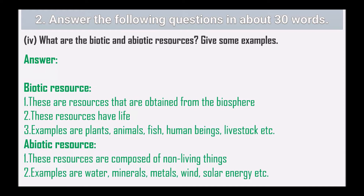Biotic resources are those obtained from the biosphere and have life. Examples are plants, animals, fish, humans, and livestock. Abiotic resources are composed of non-living things. Examples include water, minerals, metals, wind, and solar energy.